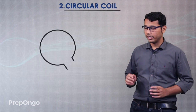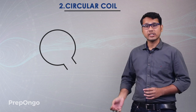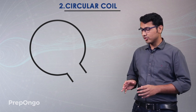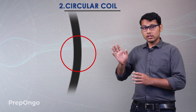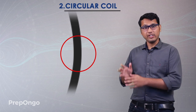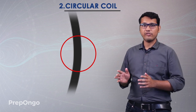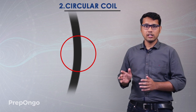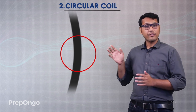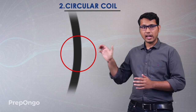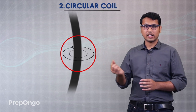Our second conductor is the circular coil. We have to find the magnetic field due to this circular coil. Let's zoom in on a particular portion of this coil — when we zoom in, that small portion looks like a straight conductor. We know how to find the magnetic field around a straight current-carrying conductor: we can apply the right-hand thumb rule. Applying it to that straight portion, we again get concentric circles around that particular portion.